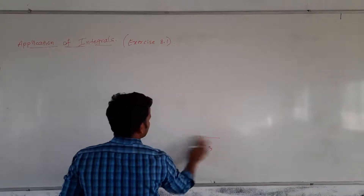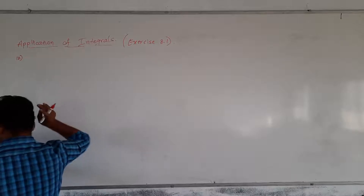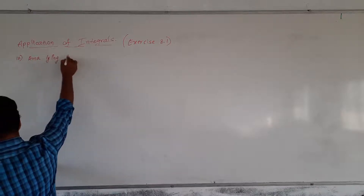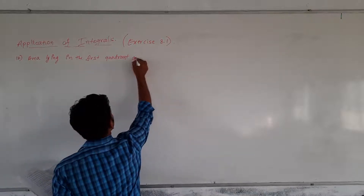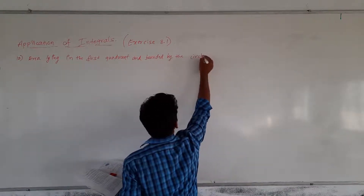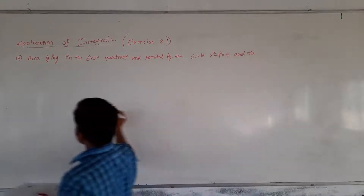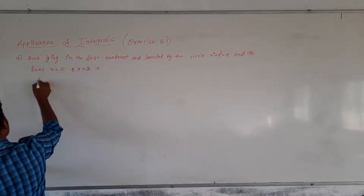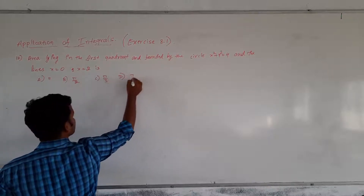I will move on to the next question, that is question number 12. Question number 12 is a choose the correct answer type question. It is: area lying in the first quadrant and bounded by the circle x² + y² = 4 and the lines x = 0 and x = 2. Option A: π. Option B: π/2. Option C: π/3. Option D: π/4.